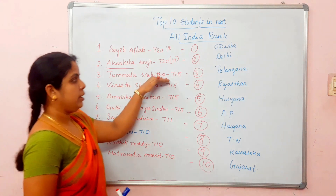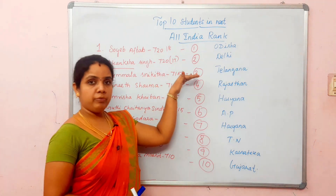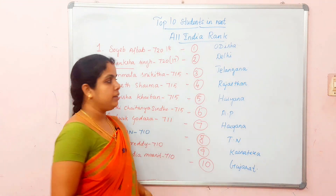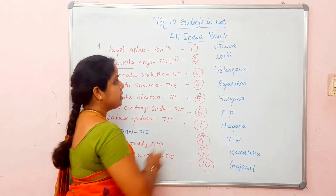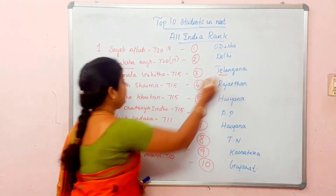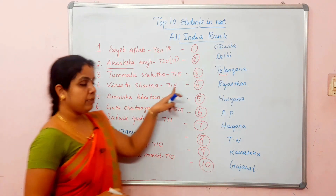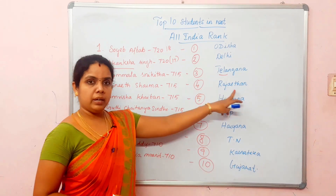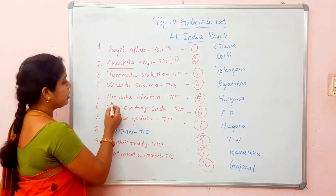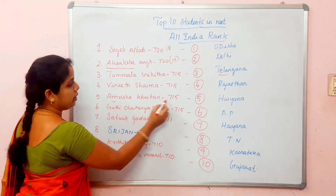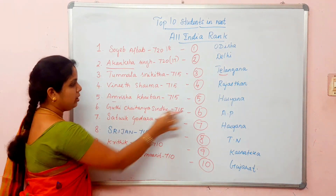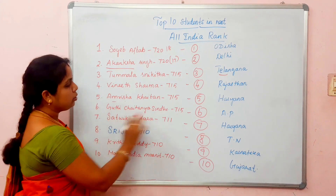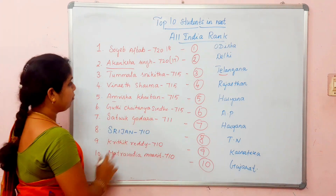Then, Tumala's Nikita scored 715 and got third rank at the All India level. She is from Telangana. Then, Vinith Sharma scored 715 and got 4th rank. He is from Rajasthan. Then, Amrusha Kaithan scored 715 and got 5th rank. Then, Gyuthi Chaitanya Sindhu also scored 715 and holds 6th rank.